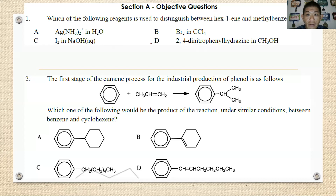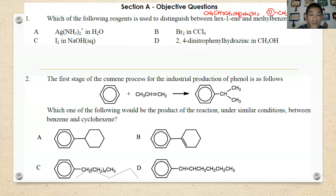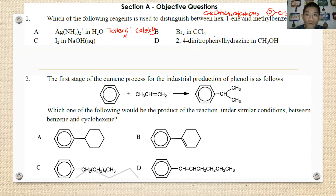For information, hex-1-yne has a CH3, CH2, CH2, CH2, CH≡CH structure, and methylbenzene looks like a benzene ring with a methyl group. Which is the best way to distinguish them? Silver — that is actually Tollens' reagent — is used for aldehydes, so you cannot use it. Bromine in CCl4 can be used because it is specific for benzene.